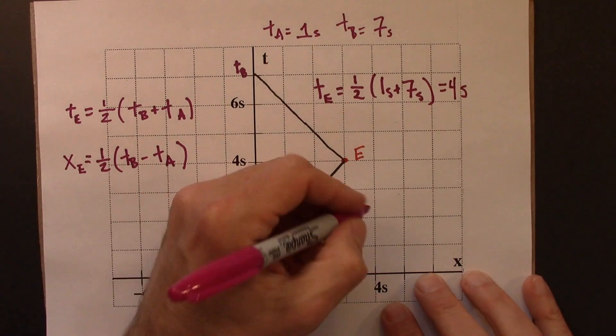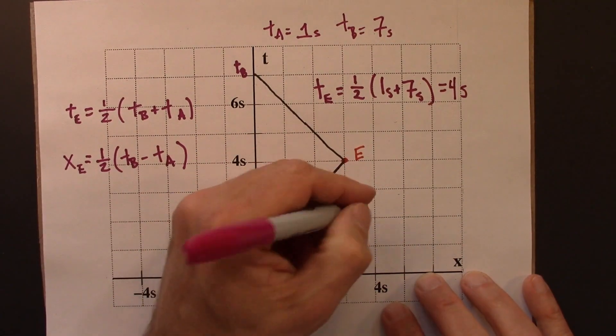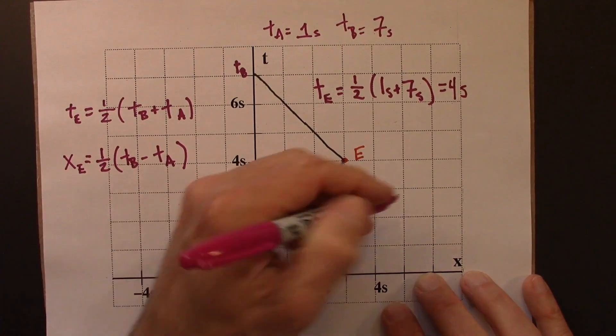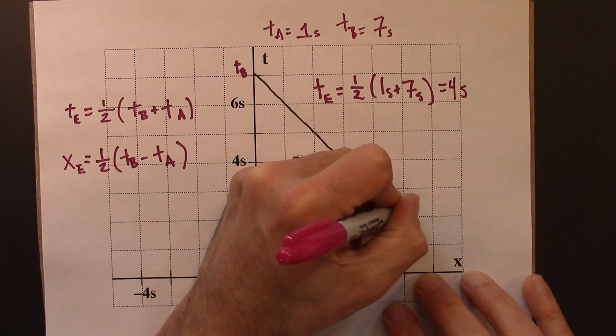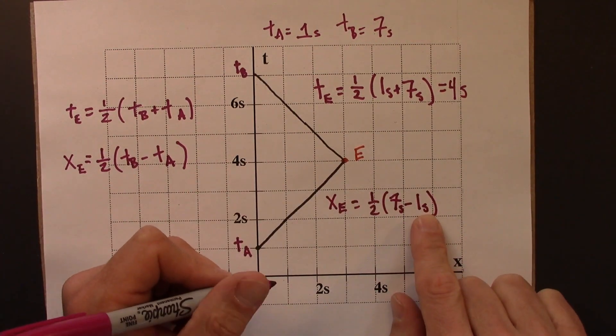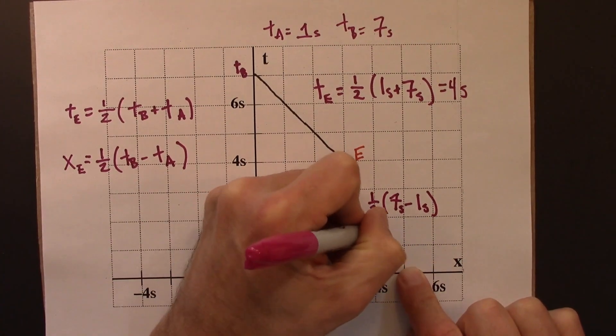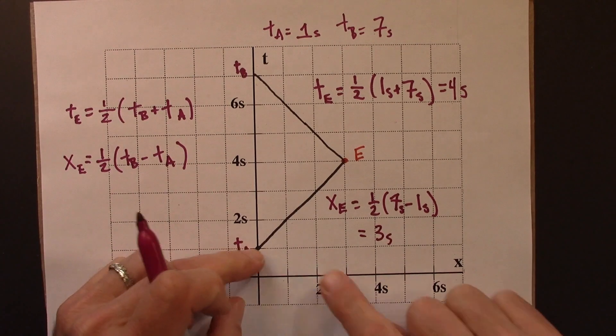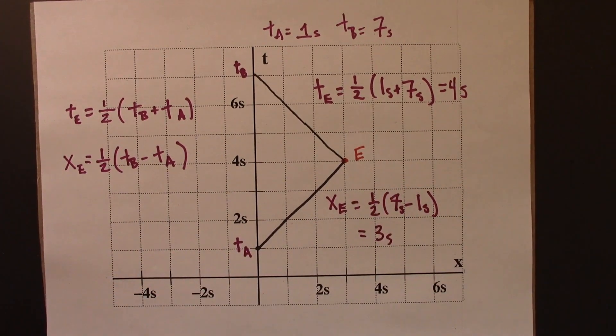Now let's figure out the X coordinate. The X coordinate for space-time event E is a half TB, which is seven, minus one. Seven minus one is six. A half of six is three. So this is three seconds, and indeed that is the space-time coordinate for that.